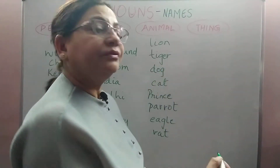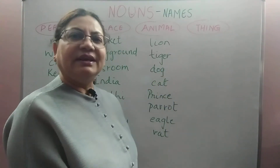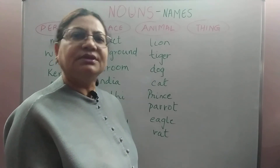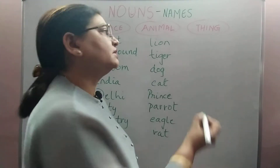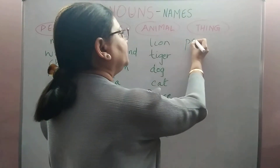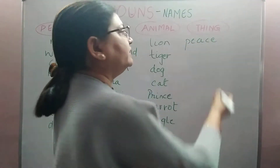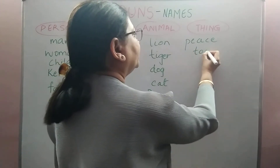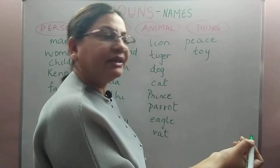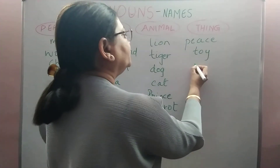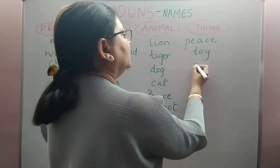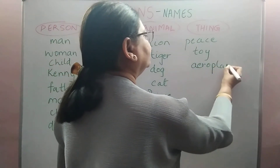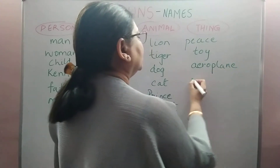And then we come to the names of things. In names of things we could also include names of ideas, because they are also things. For example, peace — peace is an idea and it is a thing. It could be a toy — toy is also a thing and it is a noun. Or it could be an aeroplane — an aeroplane is also a noun. A cupboard is also a noun.